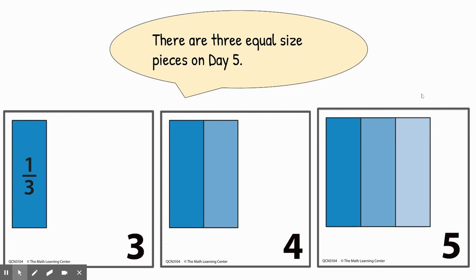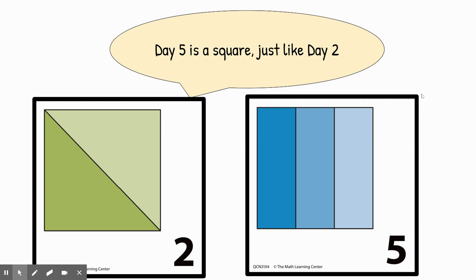Here are some examples of things that students have noticed. One student said there are three equal-sized pieces on day five. Another student noticed that day five is a square, just like on day two.